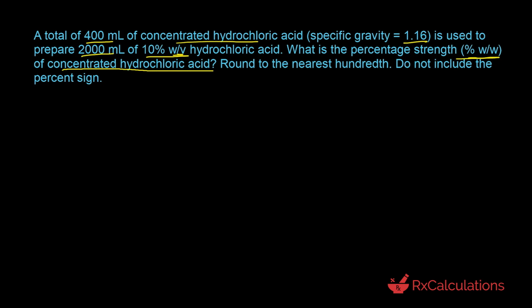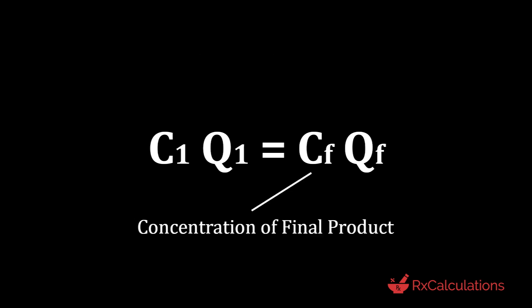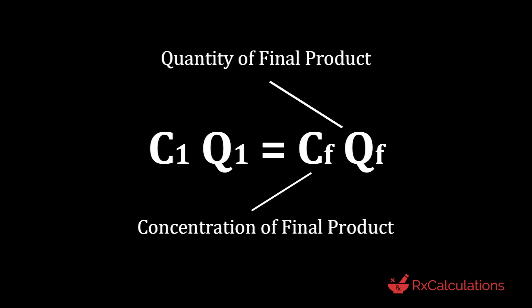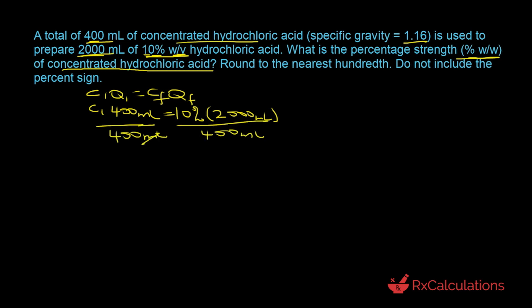The simplified algebraic equation we use is C1 times Q1 equals C-final times Q-final, where C1 is initial concentration, Q1 is initial quantity, CF is final concentration, and QF is final quantity. C1 is what we're determining; Q1 is 400 milliliters; CF is 10% weight by volume; and QF is 2000 milliliters. Substituting: C1 times 400 milliliters equals 10% times 2000 milliliters. Dividing both sides by 400 milliliters, the milliliters cancel and C1 equals 50%.